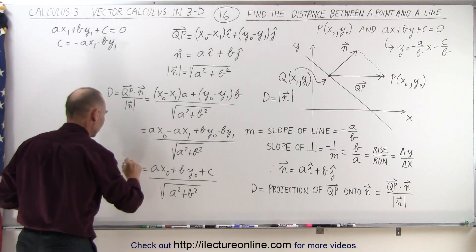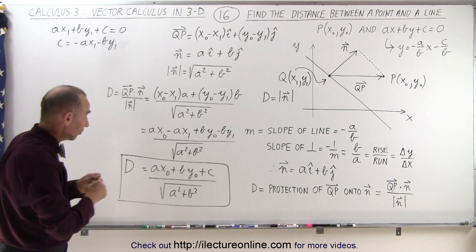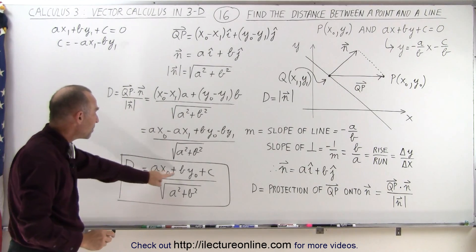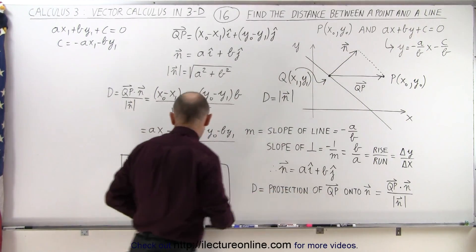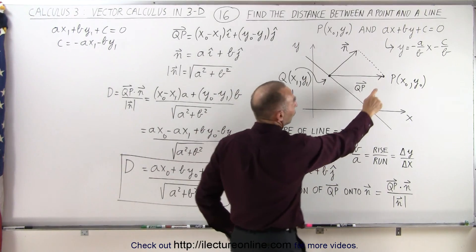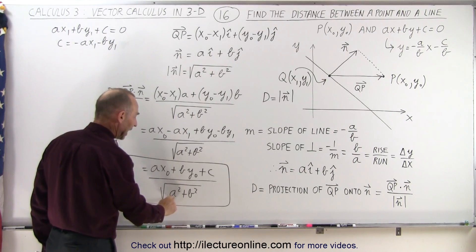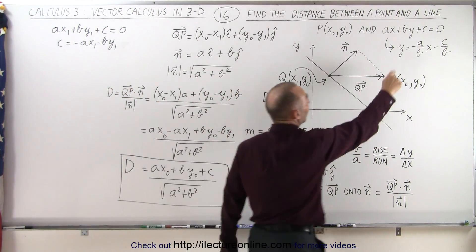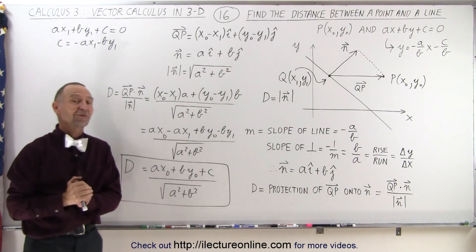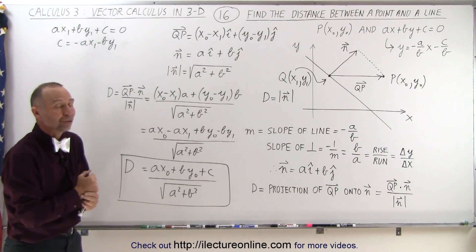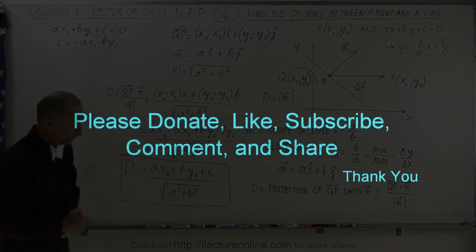So the distance between the point and the line is given by that formula. Notice that A, B, and C are the coefficients defined by the line. X-sub-naught and Y-sub-naught are the coordinates of the point in question. The denominator, the square root of A squared plus B squared, again uses A and B as defined by the line equation. That's how we find the distance between any arbitrary point and any line in two dimensions defined by that equation. Thank you.